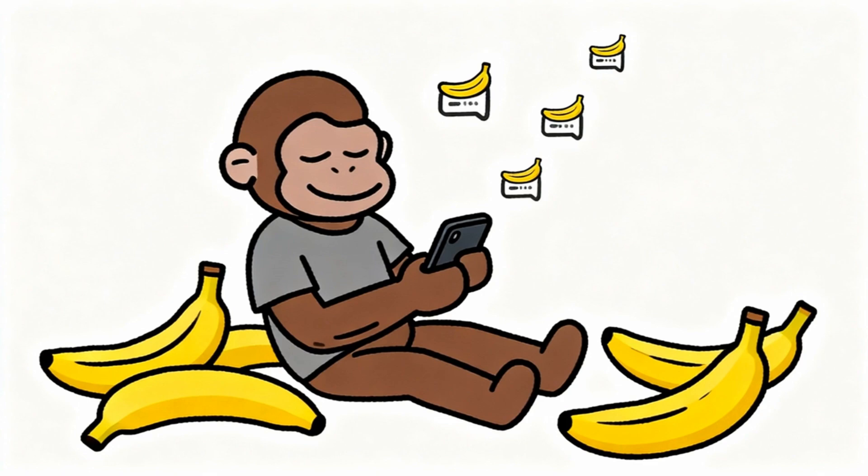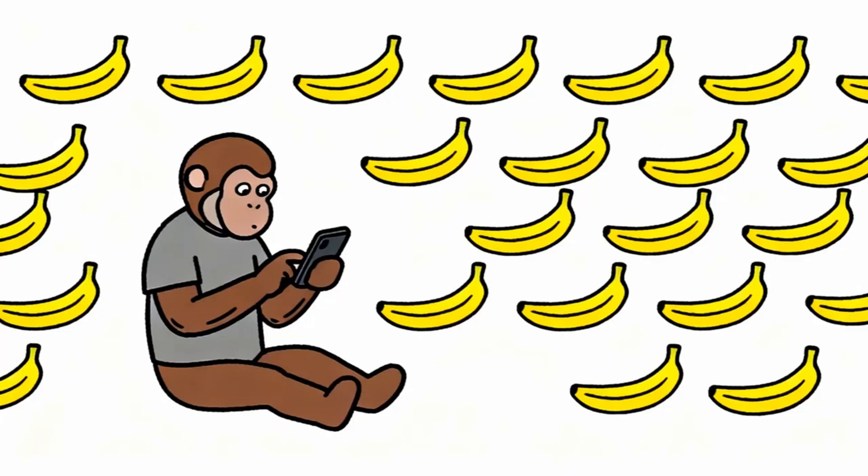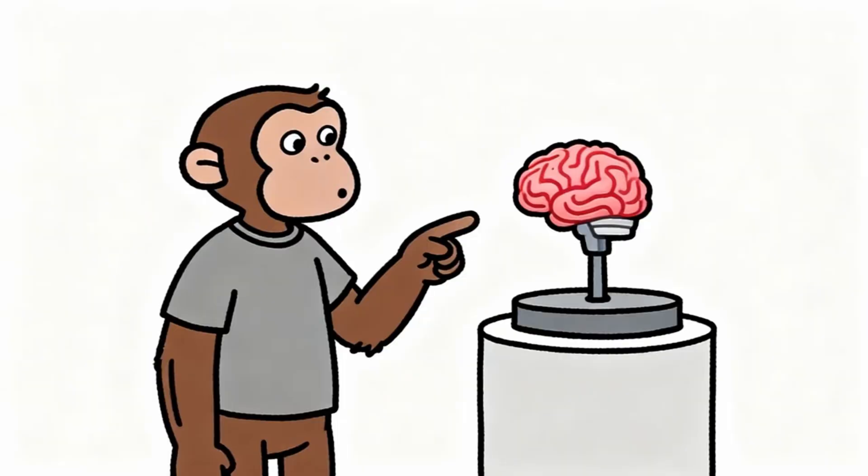Most monkeys do not even realize they are trapped. Monkey thinks constant banana availability is normal. Monkey thinks needing phone every few minutes is just modern life. Monkey thinks inability to sit quietly without stimulation is personality trait. But these are symptoms of dopamine dysregulation, not natural monkey behavior.